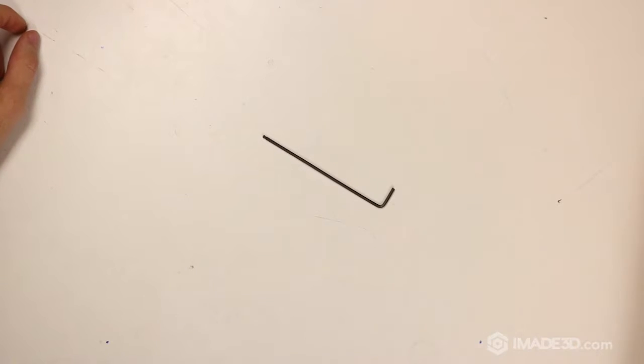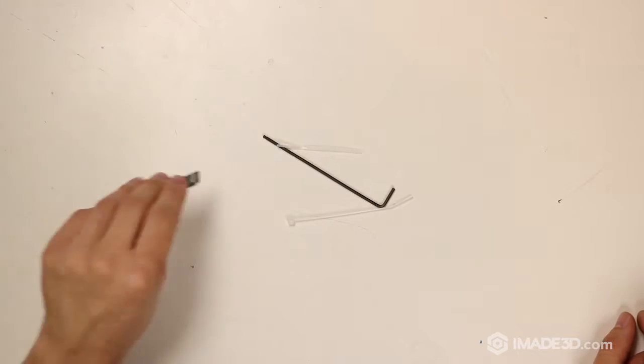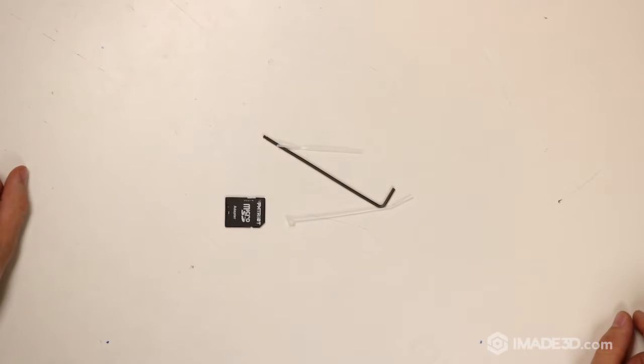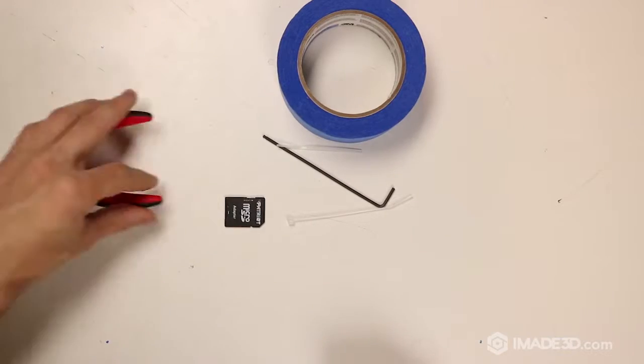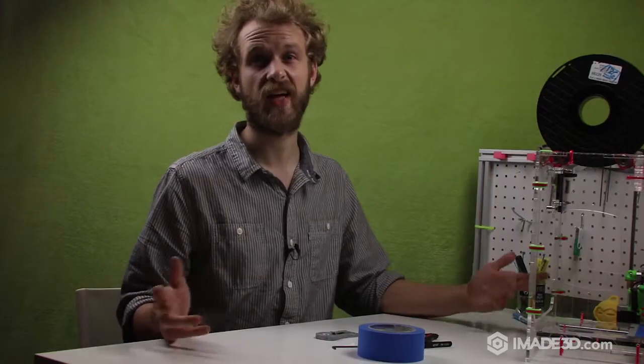You're going to need a 2.5 millimeter M3 hex key, a miniature zip tie or a leftover from a miniature zip tie, SD card with some g-code on it and things that you normally need for printing: blue tape, snips, something to peel the prints off with and your tweezers. And a piece of paper, very important. And that's it.